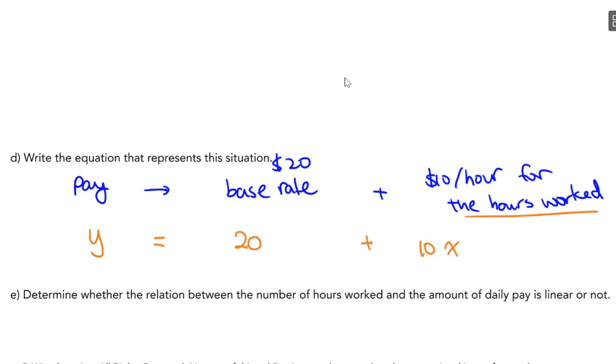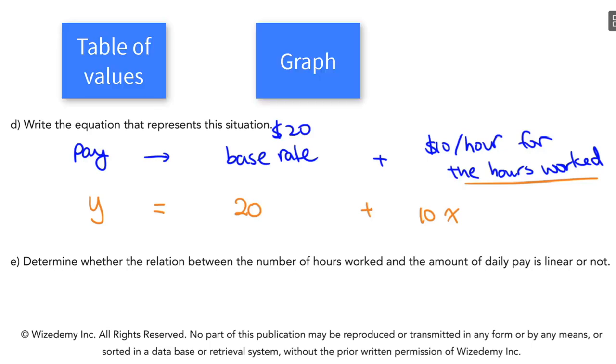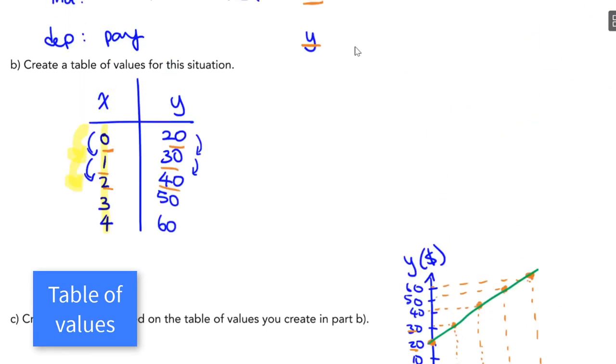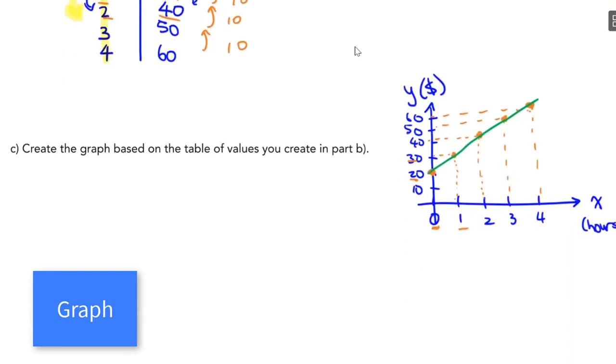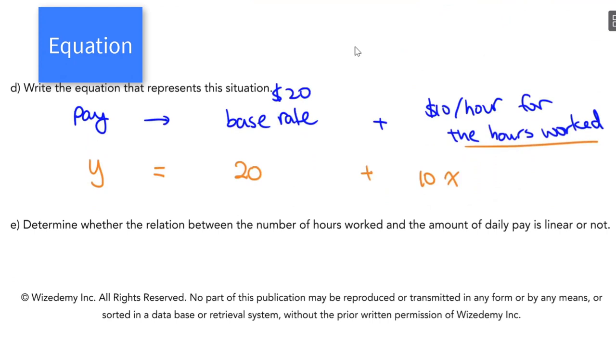In part E, we want to determine whether this relation is a linear relation or not. You have three different modes to represent this relation. You have your table of values, you have your graph, and you have your equation. From the table of values, you can calculate the first difference by subtracting the consecutive Y values. If you do that, you'll notice that they're all constant. They're all 10. Since these first differences are constant, we know that it's a linear relation. Or we can look at the graph. The graph is just a straight line. So right off the bat, we know it's a linear relation. Or you can look at the equation. In the equation, our independent variable X has an exponent of 1. So indeed, the degree is 1, meaning that it is a linear relation. So from all three scenarios, we found out that this is indeed a linear relation.